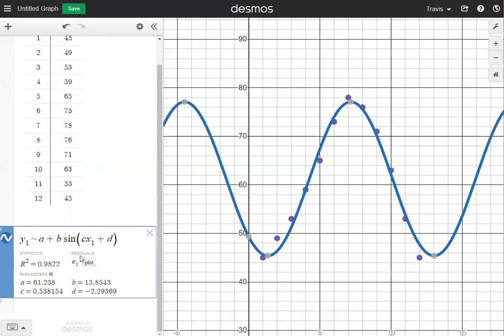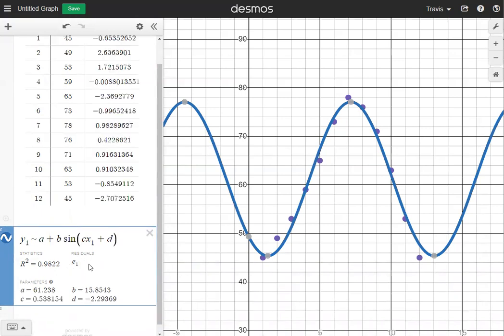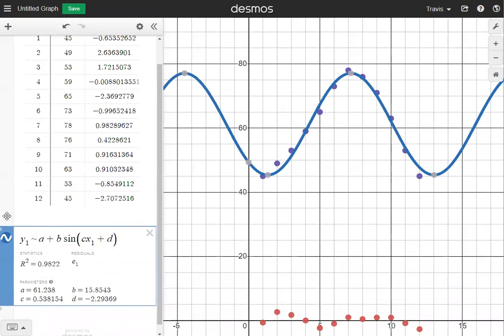Over here under residuals, I'm going to have all the error terms. That's what the E stands for. And I'm going to hit the plot button right here to show the error dots. Now, I can't see the error dots right now, but if I click the zoom fit button on the bottom of box one, it'll show all the error terms at the bottom near the X axis.